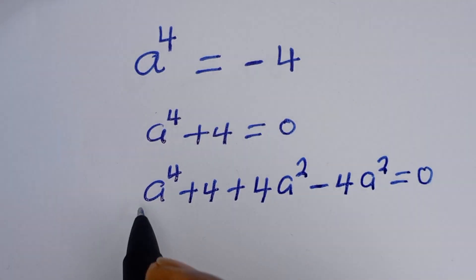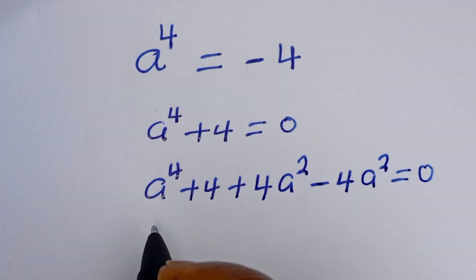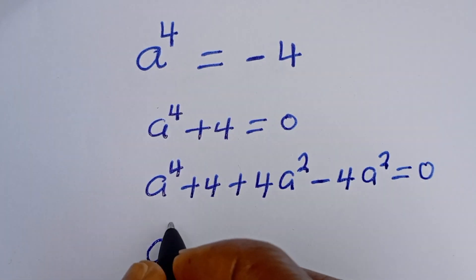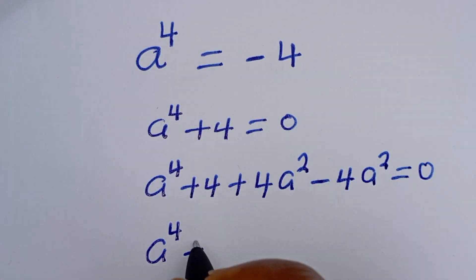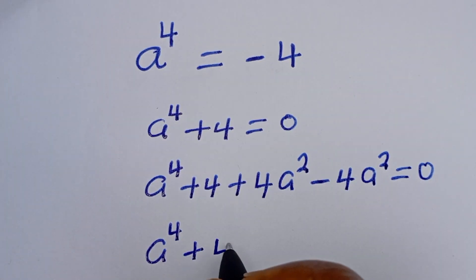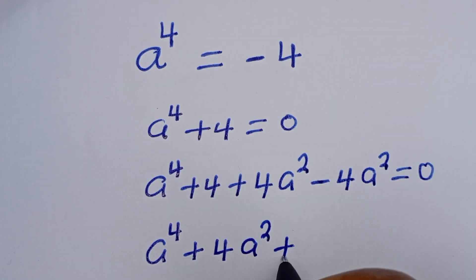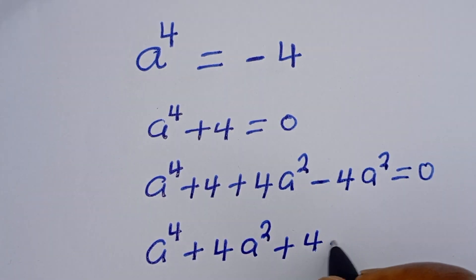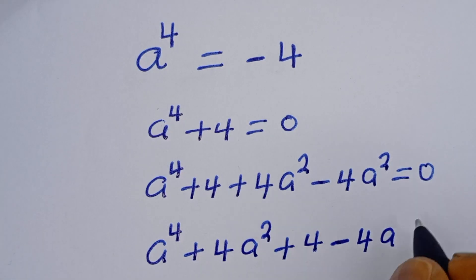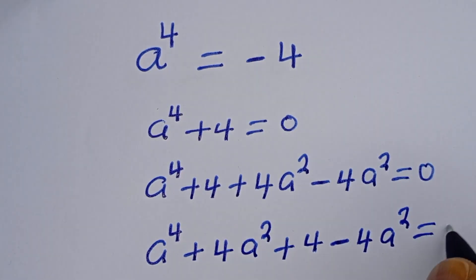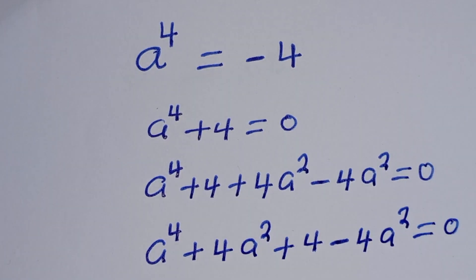Now this can be written as a to the power of 4, plus 4a squared, plus 4, minus 4a squared, is equal to 0.